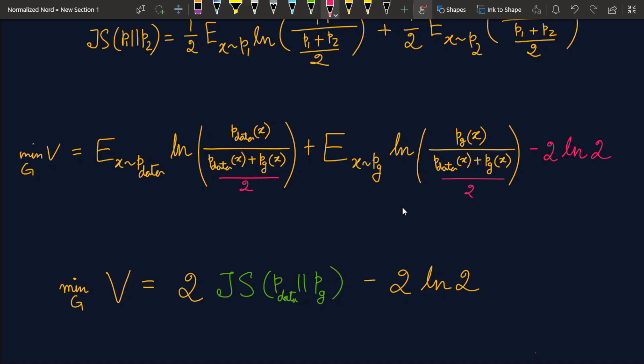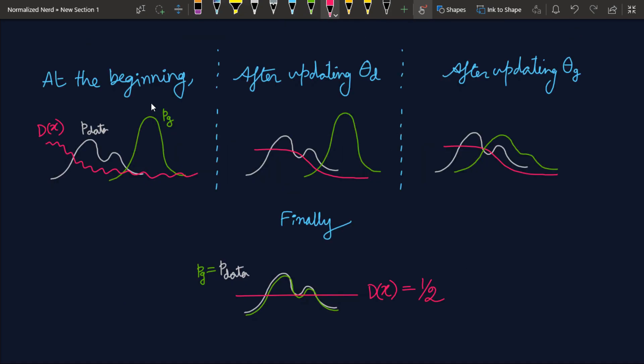Now let me show you how G achieves that state. That is different phases of training. So at the beginning, neither the discriminator nor the generator knows what they are doing. So the Pg is not replicating the Pdata. And the classifier discriminator is not classifying as well. After updating the ThetaD, that is when the discriminator has learned something, so the classifier will be better. So now the discriminator can actually distinguish between the real data and the fake data.